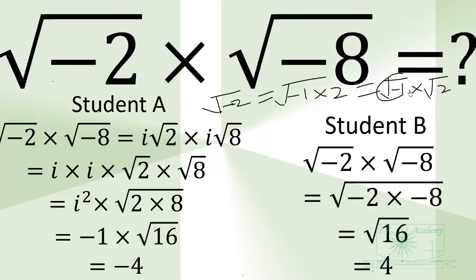Then treating square root of negative 1 as i, Student A obtained i root 2. And for the square root of negative 8, you obtain i root 8. Multiplying the i parts gives i squared, and multiplying root 2 and root 8 gives root 16. i squared is negative 1, and negative 1 times 4 will give negative 4.